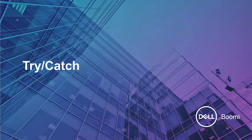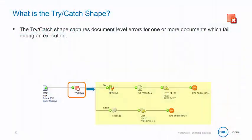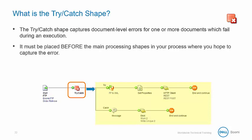Our next topic is the try-catch shape. The try-catch shape captures document-level errors for one or more documents that may fail during an execution. This needs to be placed before the main processing shapes in your process where you hope to capture the error.